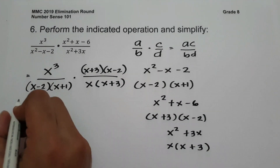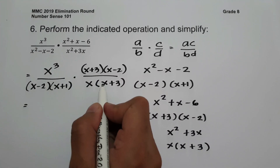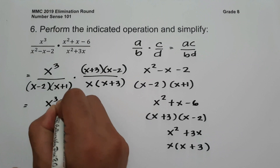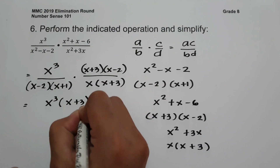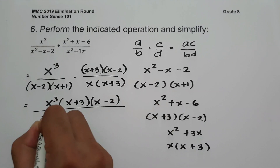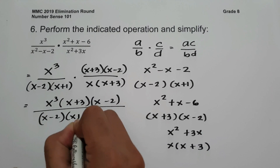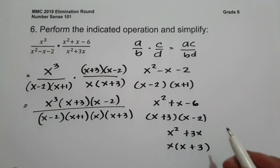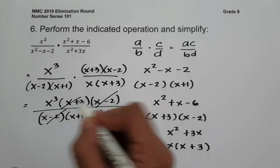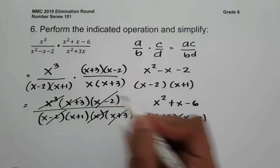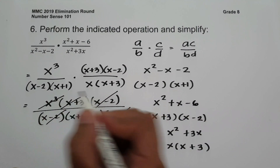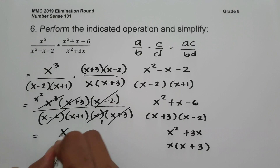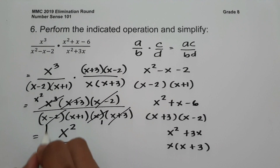Writing everything out: numerator is x³ times (x + 3)(x - 2); denominator is (x - 2)(x + 1) times x(x + 3). We cancel (x + 3), (x - 2), and one x from x³, leaving x². So our final answer is x² over (x + 1).